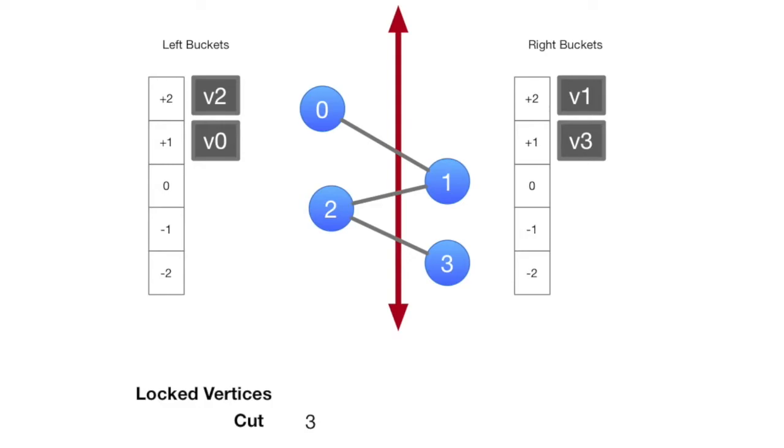All right, so let's walk through a simple example of Fiduccia-Mattheyses. I've got a fairly small graph, hopefully it'll be easy to follow along what's going on. I've got four vertices, 0, 1, 2, and 3, three edges.